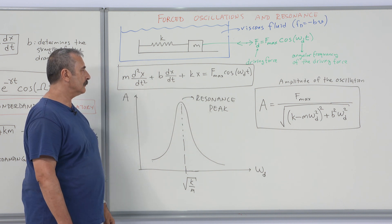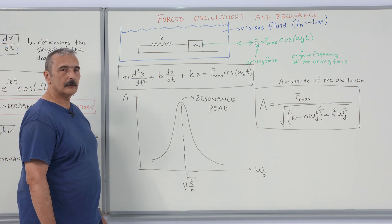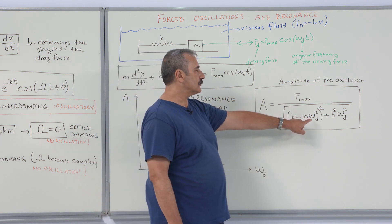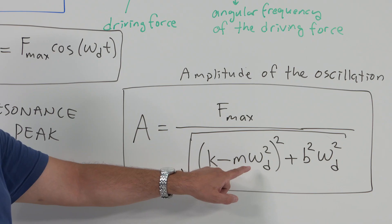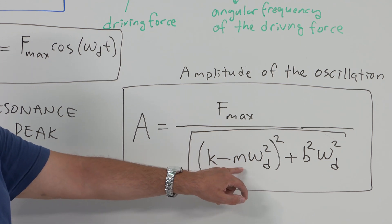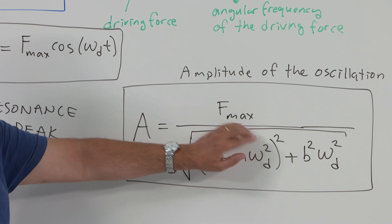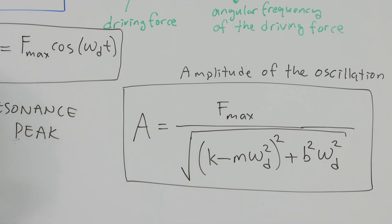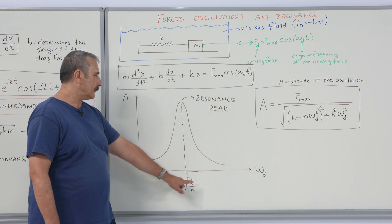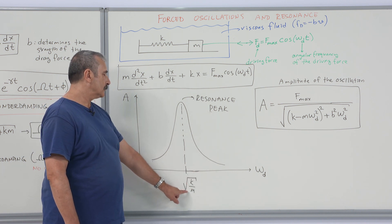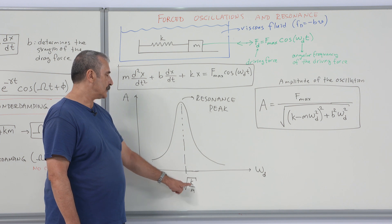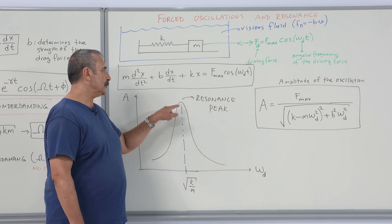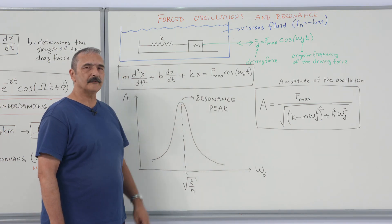We will not solve the equation explicitly, but the amplitude of oscillations is now frequency-dependent. When the driving frequency equals the square root of k over m, this term vanishes and we observe amplitude maximum. If there is no drag force, the amplitude becomes infinite — which is of course not physical. When the driving frequency equals the natural vibrational frequency of the undamped system, square root of k over m, we call this interesting phenomenon resonance.